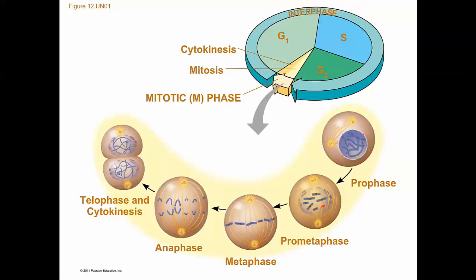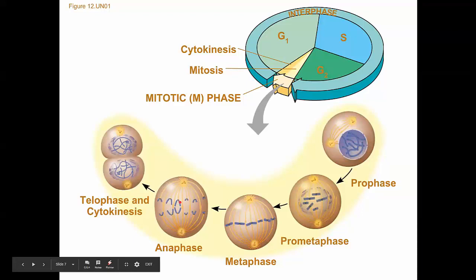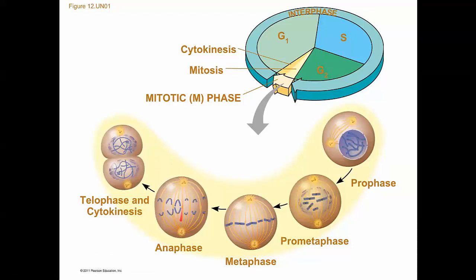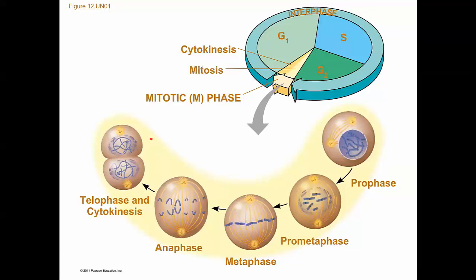We're not going to worry about prometaphase so much in lab. We'll go from prophase, prometaphase, metaphase, anaphase, and then finally telophase and cytokinesis. Notice that during anaphase, the sister chromatids separate into daughter chromosomes and are then pulled to opposite ends of the cell via the mitotic spindle. We produce two cells at the end that are identical to one another.